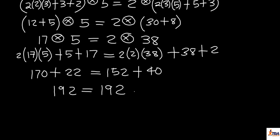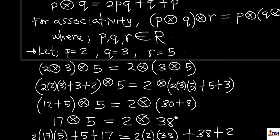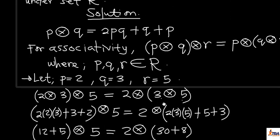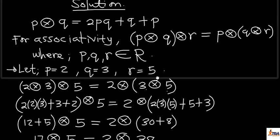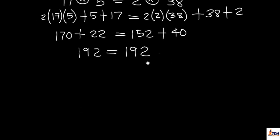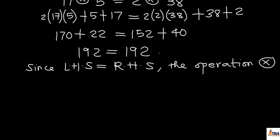Since both sides give 192, this operation is totally associative under set R. As noted at the start, this was already predictable — we concluded in a previous class that addition is always associative. When all the operations in the expression are addition, the property is associative under that set. Because we have two positive addition operations here, the operation is confirmed to be associative.